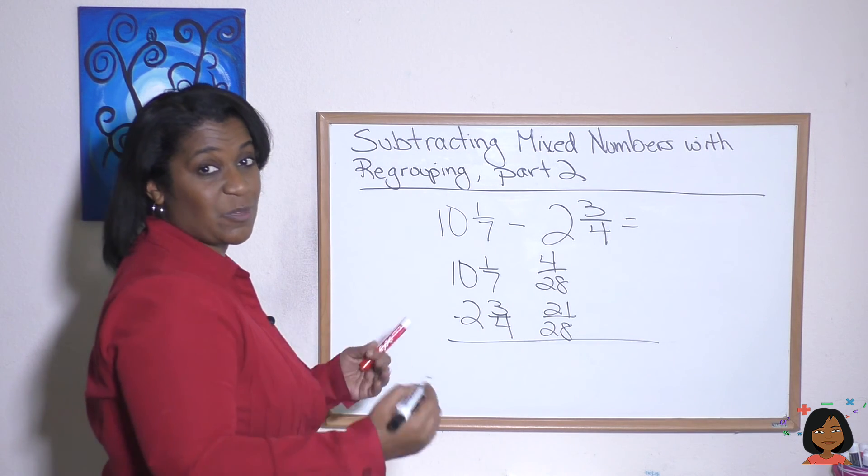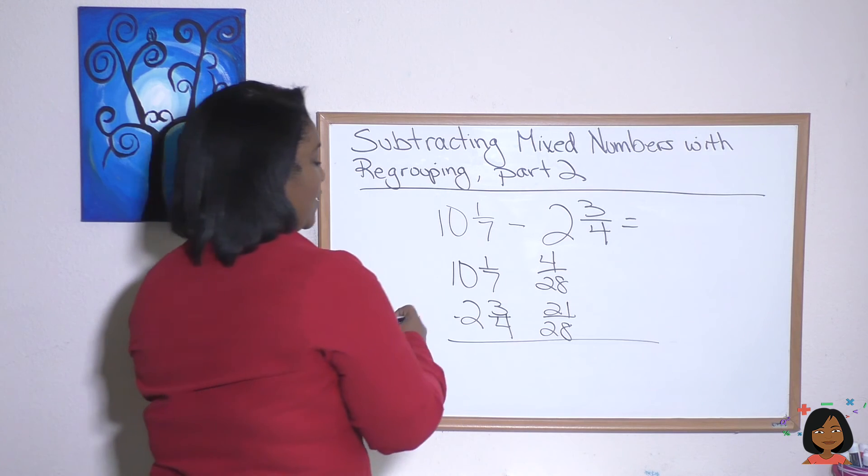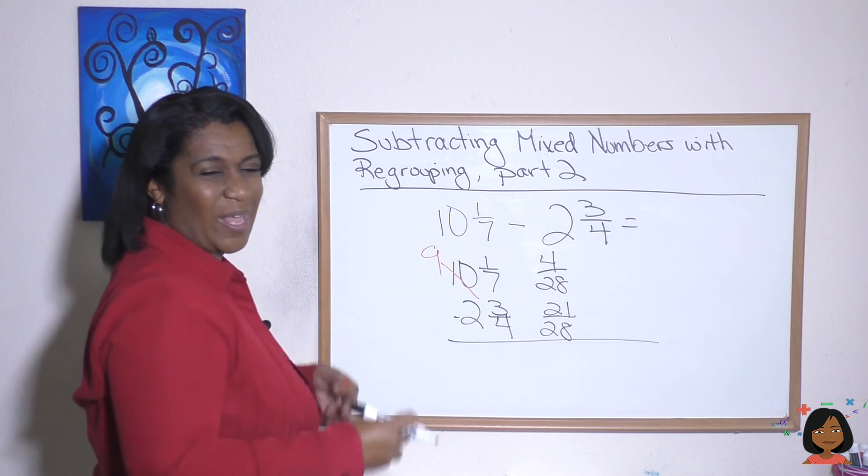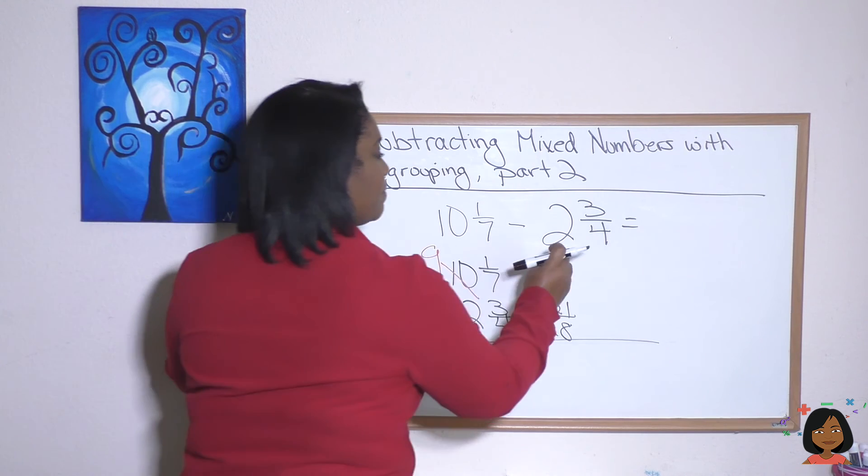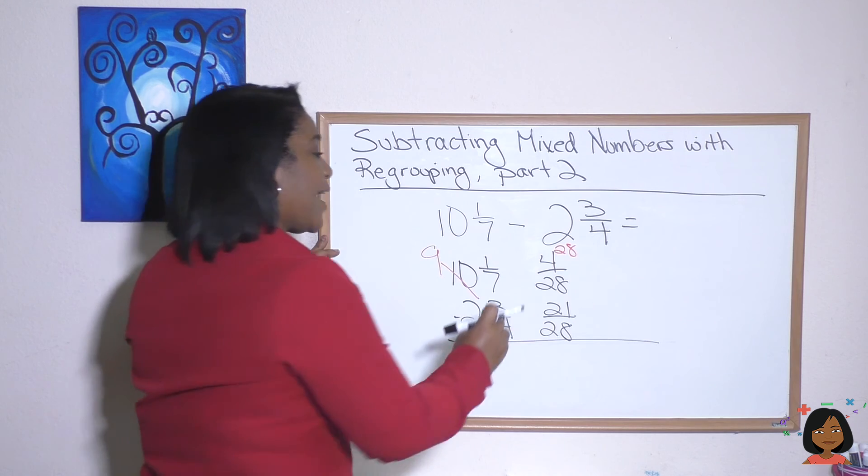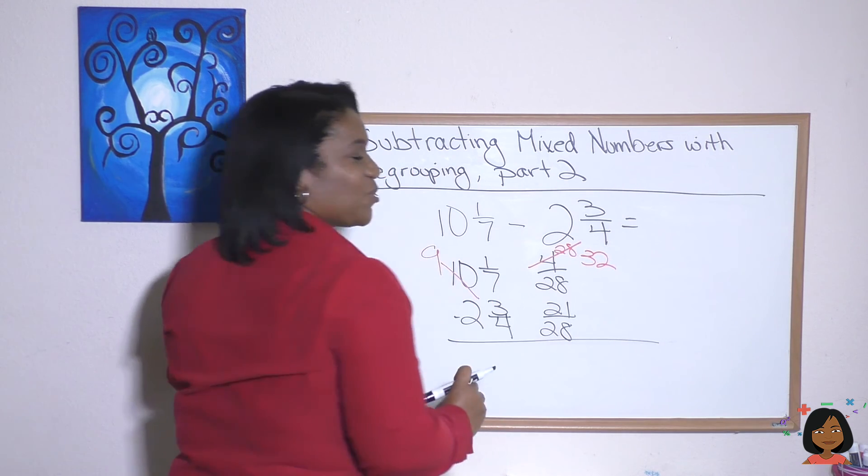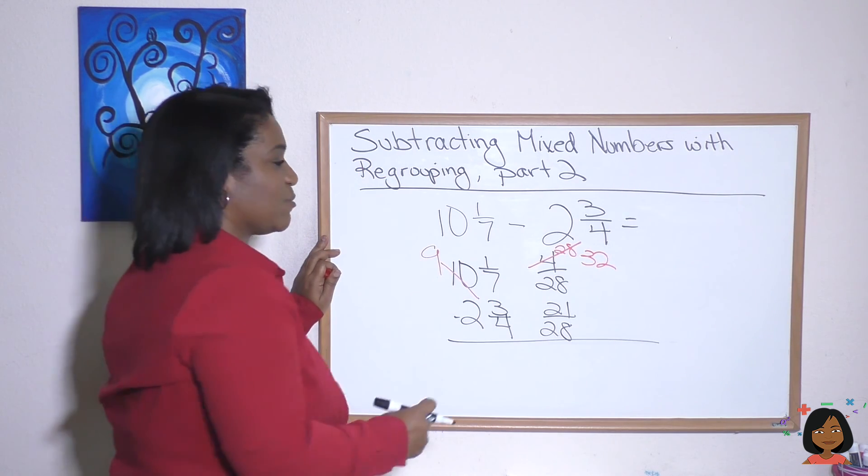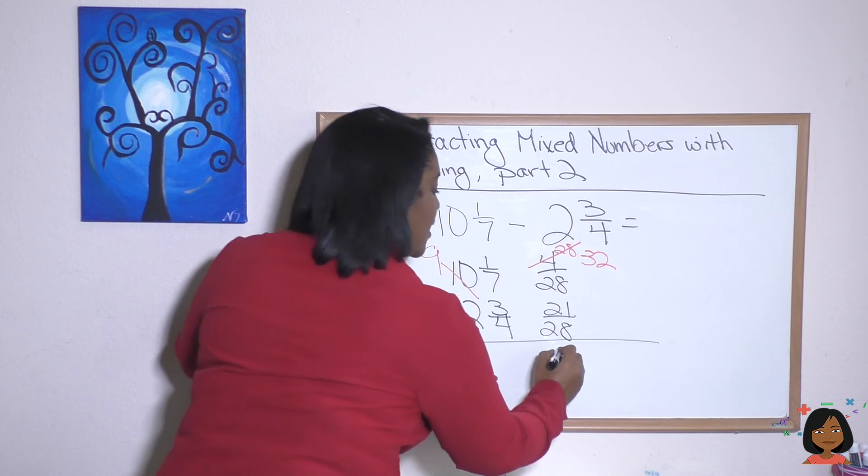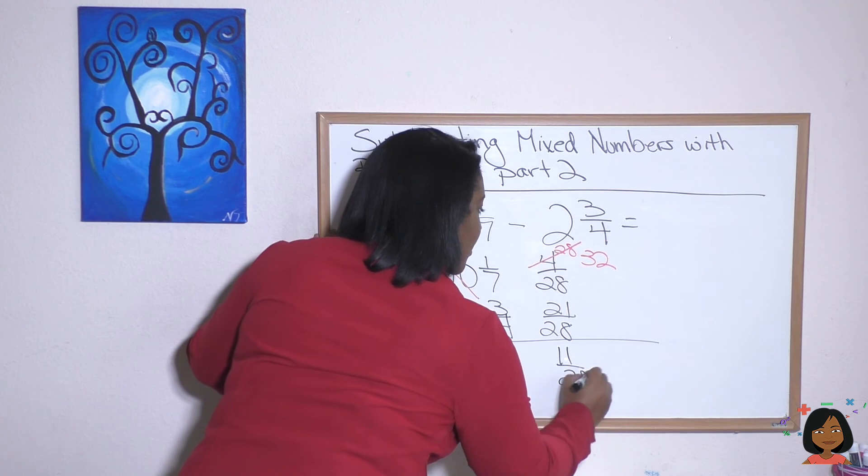You can see we have an issue with subtracting. So we're going to regroup. This ten goes to a nine. We're going to bring over 28 twenty-eighths. And I'm going to add it to my four that's already there. And that's going to be 32 twenty-eighths. Now we can subtract. 32 minus 21 is 11 twenty-eighths.